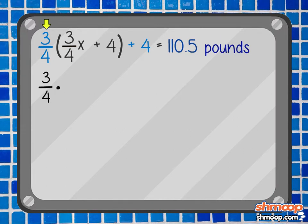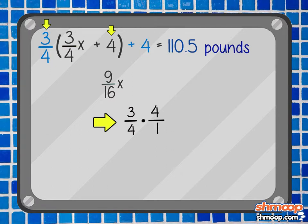Multiplying the first term by the terms in parentheses, we get nine-sixteenths x plus three plus four equals 110.5.